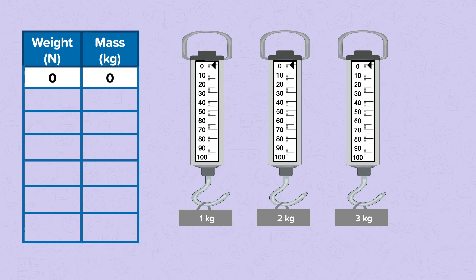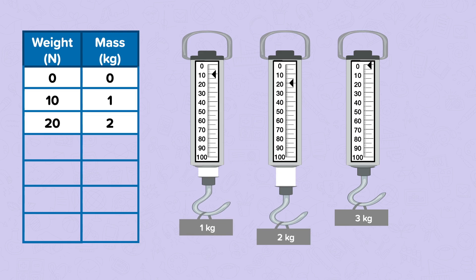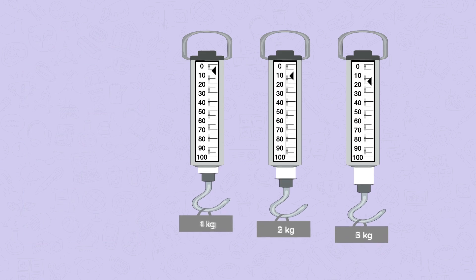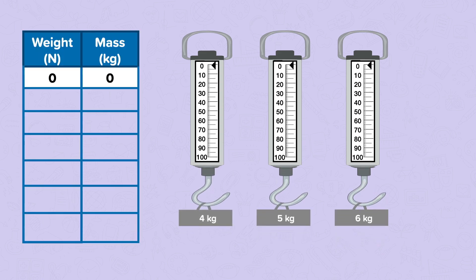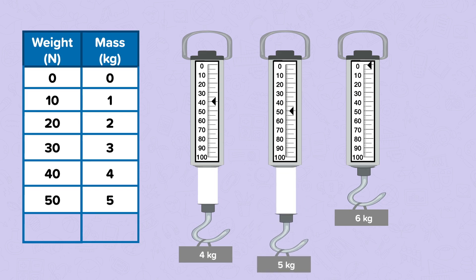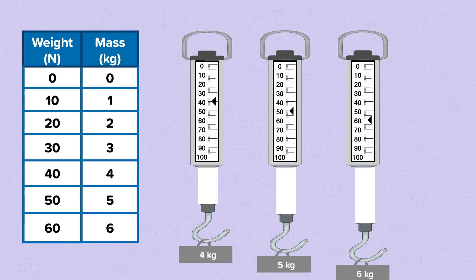With a mass of 0 kg, we have a weight of 0 newtons. A mass of 1 kg gives a weight of 10 newtons. 2 kg is 20 newtons. 3 kg is 30 newtons. 4 kg is 40 newtons. 5 kg is 50 newtons. And 6 kg is 60 newtons.